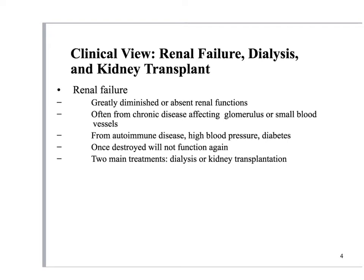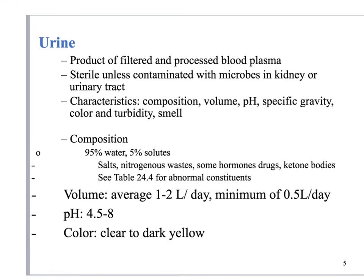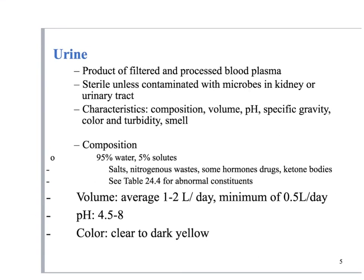The function of the kidney is to remove waste and produce urine. That urine is the product of filtered and processed blood plasma, starting at the glomerulus through filtration. Usually it's sterile unless contaminated with microbes from outside, whether they're in the kidney or in the urinary tract. So ideally, urine expelled from the body should be sterile.